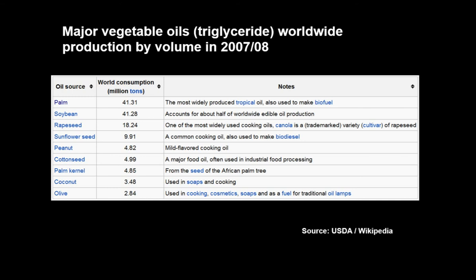Looking at major vegetable oils by worldwide production volume: palm was the biggest, followed by soybean, rapeseed, sunflower seed, peanut, cottonseed, palm kernel, coconut, and olive. Palm kernel is from the seed of the African palm tree, but palm oil was the largest worldwide production of vegetable oils in that year.